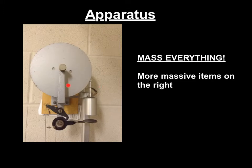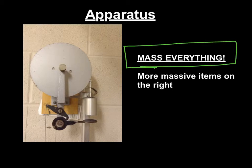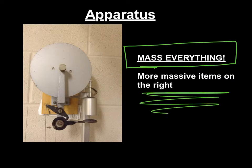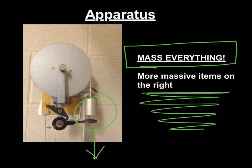So one important thing, you're going to measure very small masses and forces. So mass everything. Don't take anything for granted. And the other thing is have the more massive objects on the right, which makes sense because this is the mass that's going to fall. So mass everything, and put the more massive object on the right.